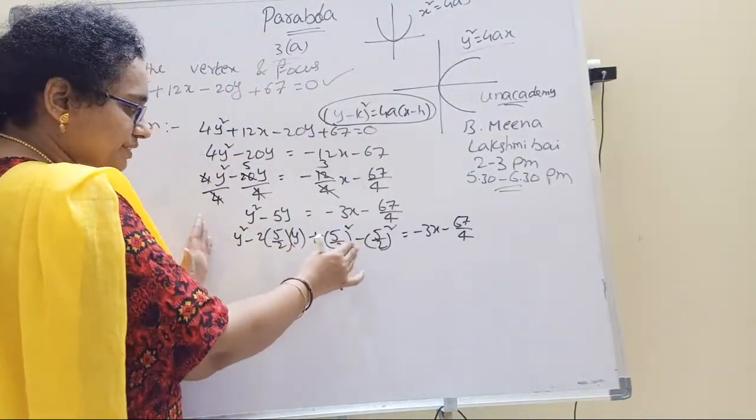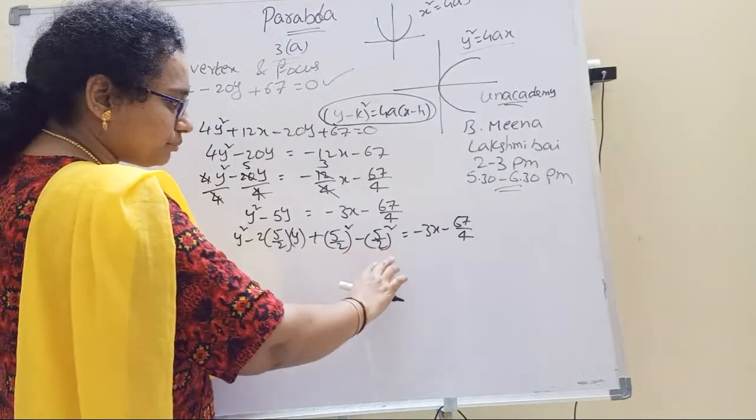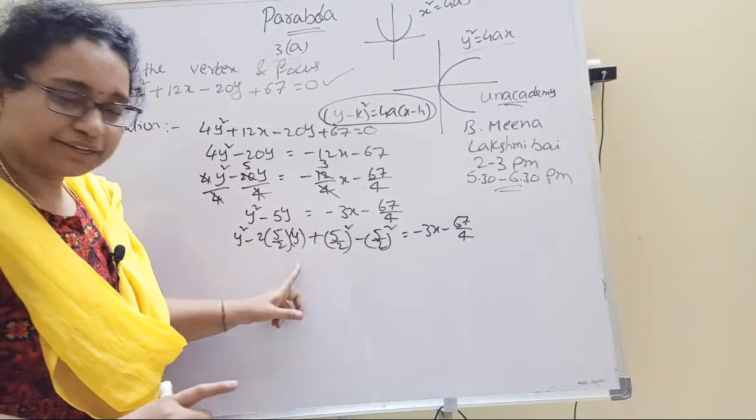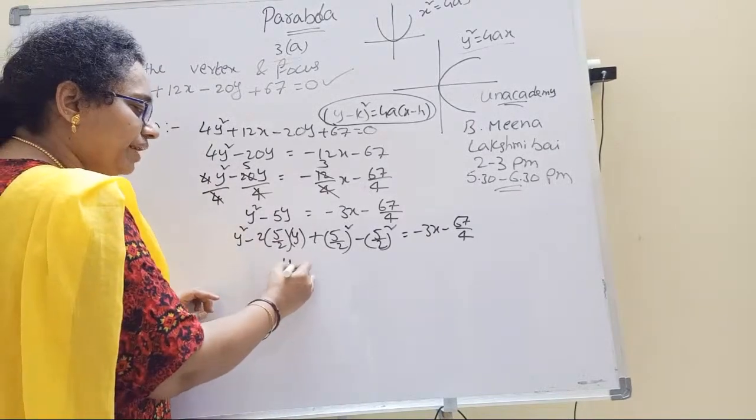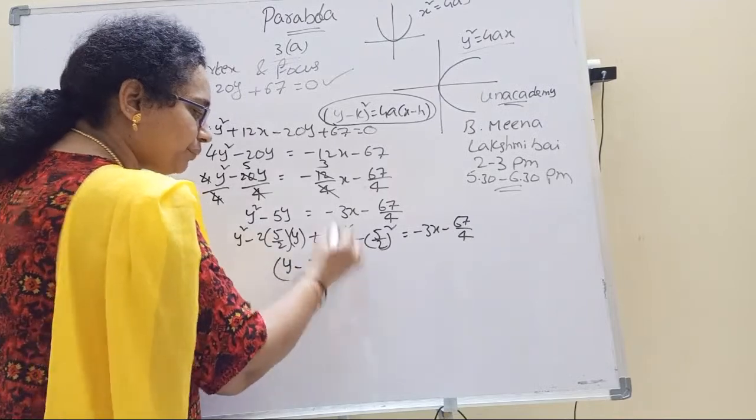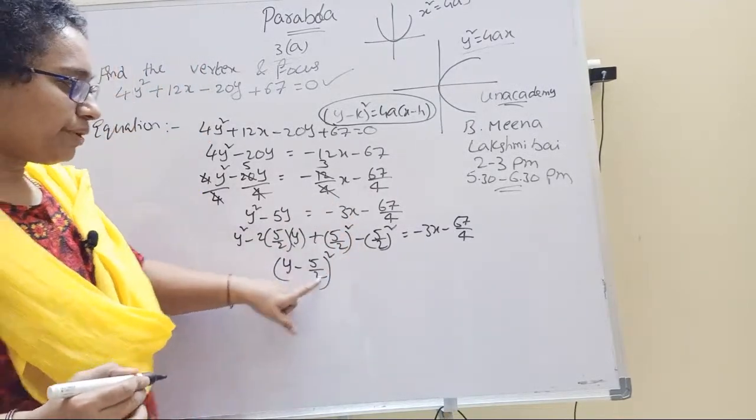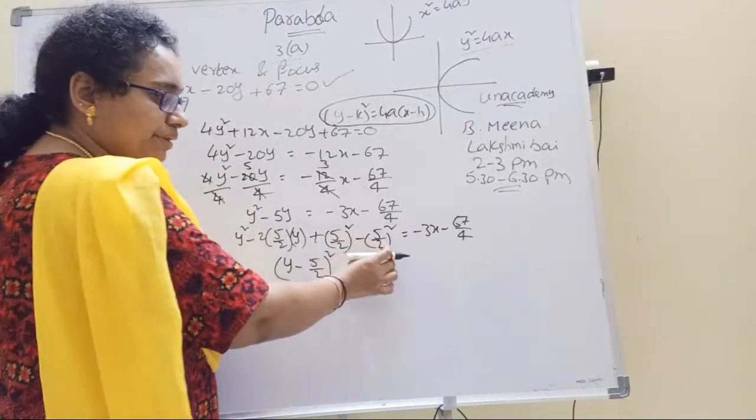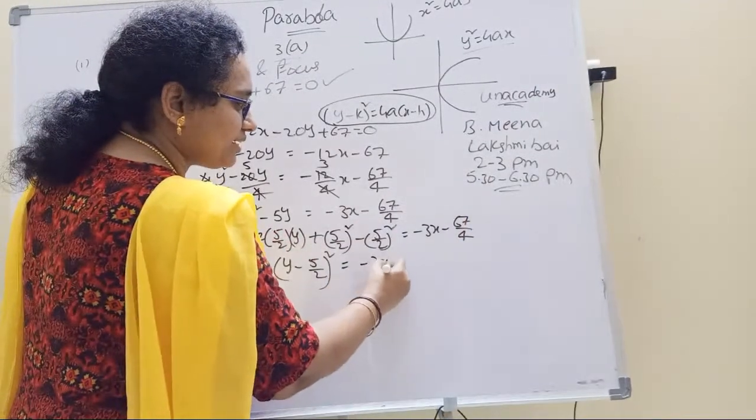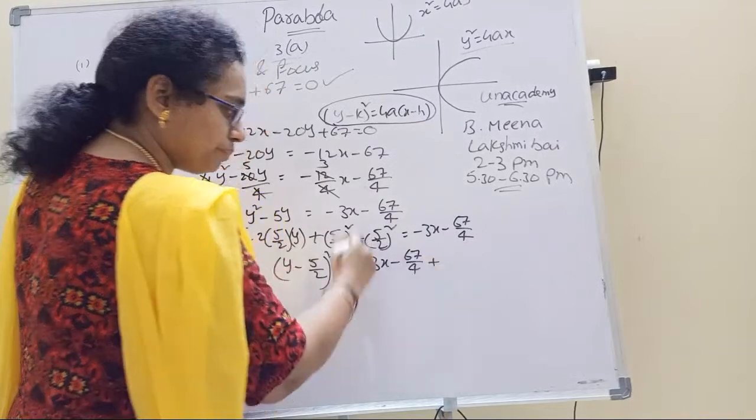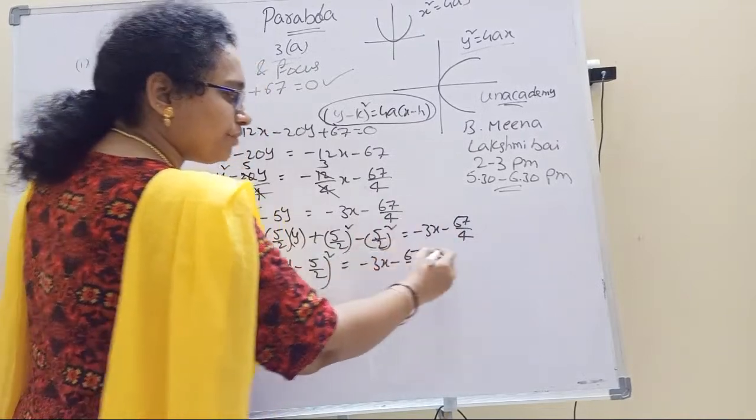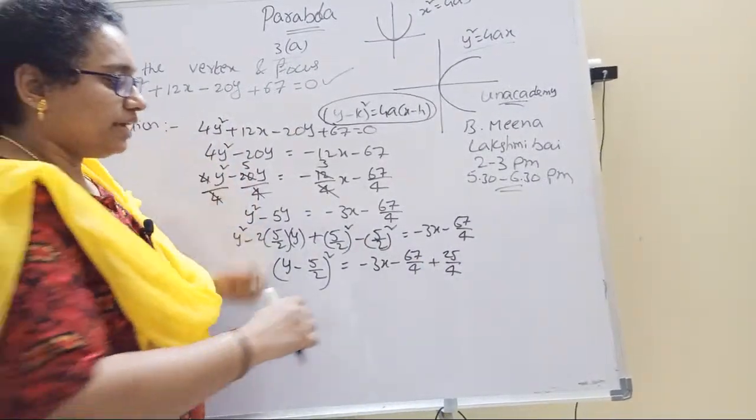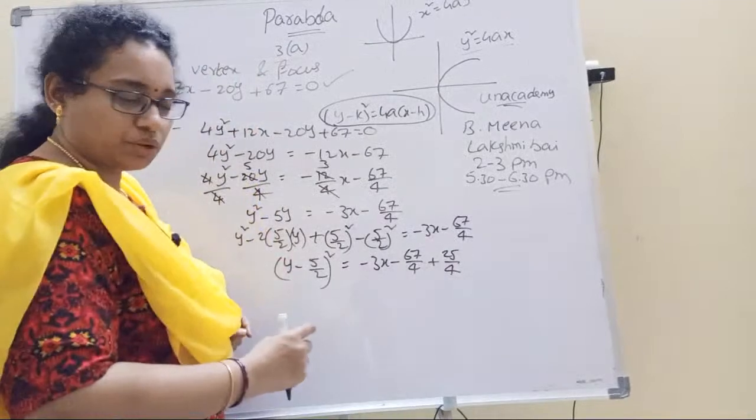This will be plus term when minus term is added. Now simplification: a squared plus b squared minus 2ab, that means y minus 5 by 2 whole squared. Right hand side: minus 3x minus 67 by 4 plus simplification 25 by 4, don't forget square.